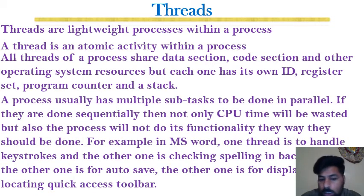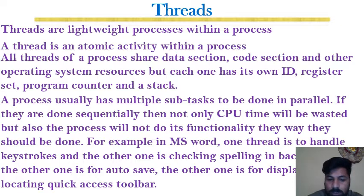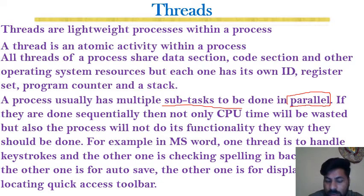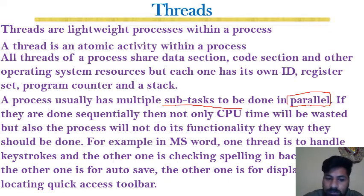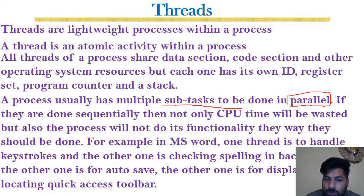A process usually has multiple sub-tasks to be done in parallel. The word 'parallel' is the motivation behind multi-threading. If tasks are done sequentially, not only will CPU time be wasted but the process will not function as it should. Responsiveness of a system is one of the important reasons behind the evolution of operating systems, as we discussed in the first chapter. To make a process responsive, we need to do multiple jobs in parallel, or at least enforce pseudo parallelism.